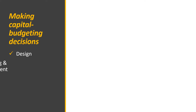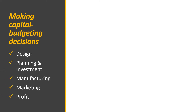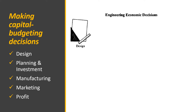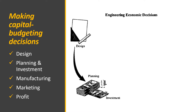Making capital budgeting decisions involves design, planning investment, manufacturing, up to marketing, and profit. Engineering decisions start with design, which is one of the main tasks of an engineer. After designing — say a building or a plant — engineering is also involved in planning and investments, since the engineer knows the equipment requirements, machinery specifications, and building materials needed.